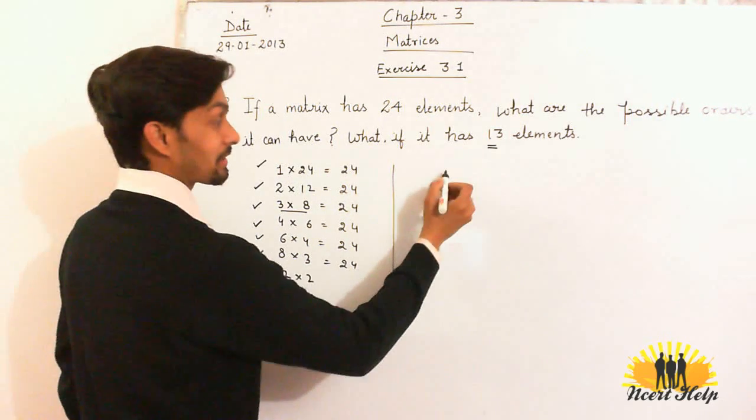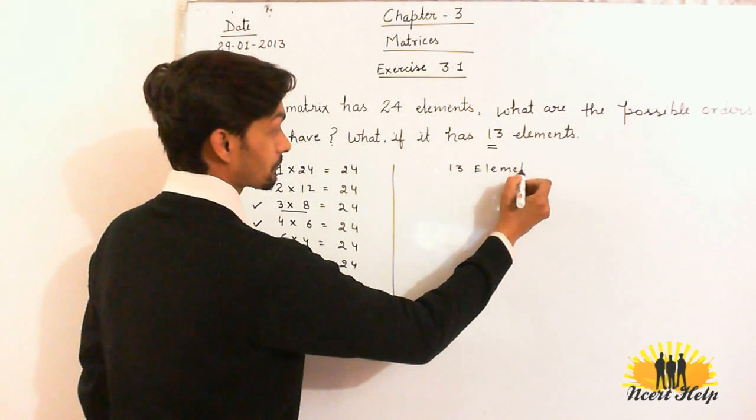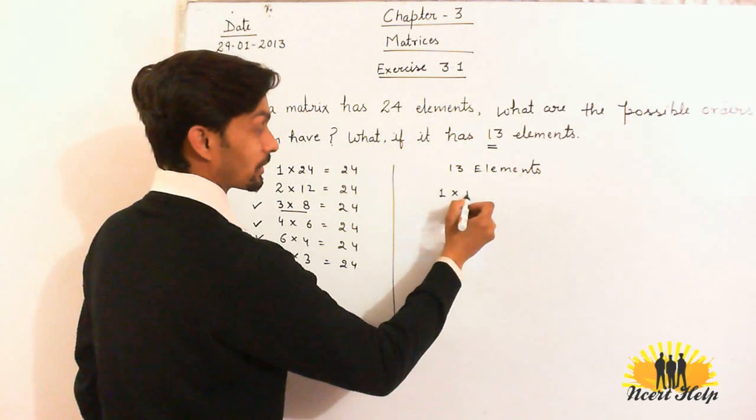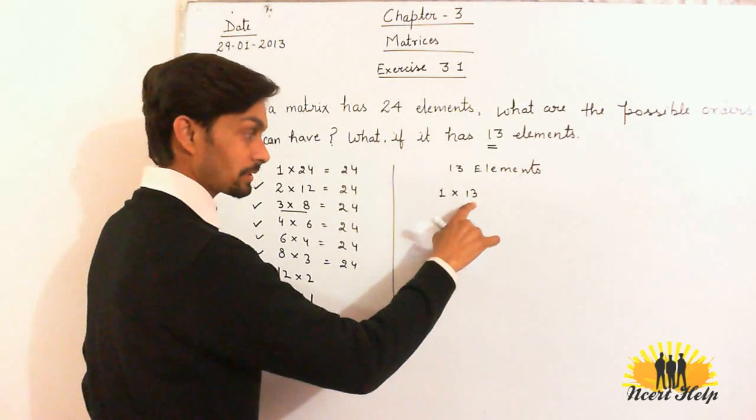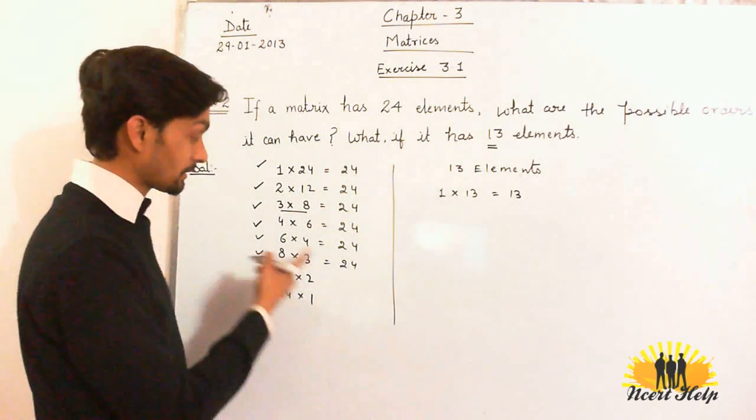So, possible order if it has 13 elements: 1 into 13, 1 row with 13 columns. It will give you 13 elements. Or as I taught you here, reverse the order.